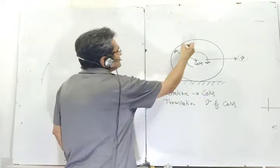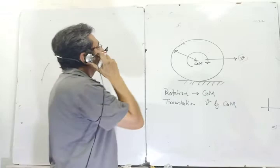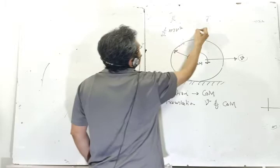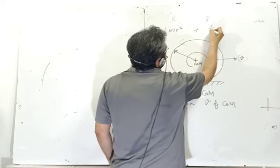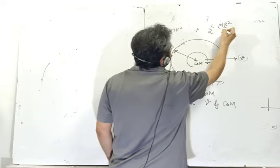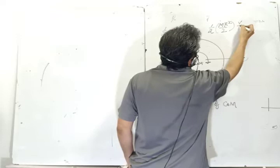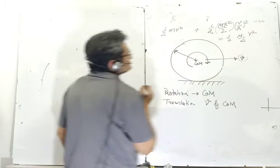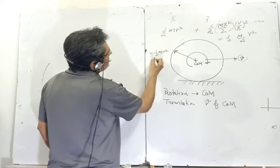If you have to find kinetic energy, you add rotational and translational kinetic energy. It is ½mv² plus ½Iω². For a disc, I = mr²/2, and ω = v/r, so rotational KE becomes ½ · (mr²/2) · (v/r)² = ¼mv². Adding both terms gives ½mv²(1 + ½), which simplifies neatly.